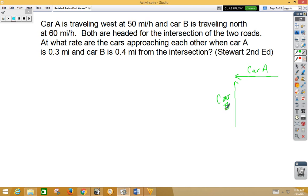What we are trying to find is the rate at which the cars are approaching each other. That's basically the hypotenuse. So I'm going to call car A x, car B y, and the distance between them z.